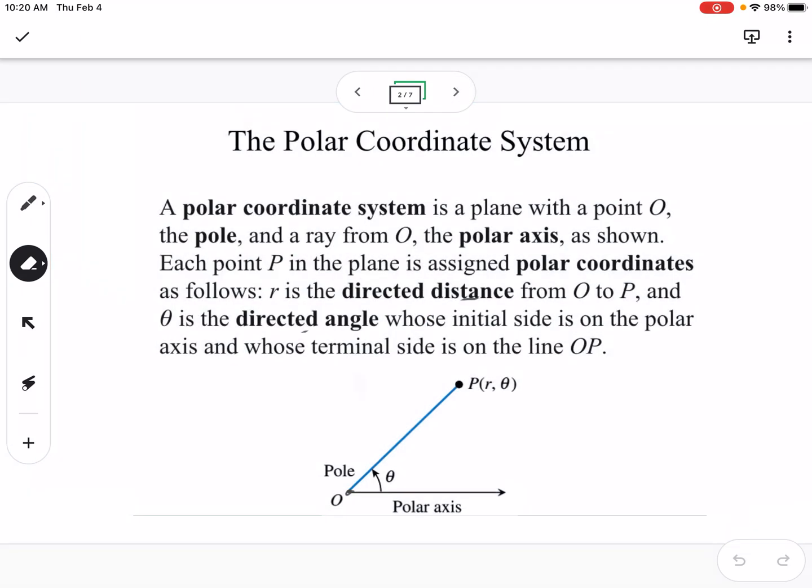So the polar coordinate system is a coordinate system based on a directed distance and a directed angle. So you can see here, points in the polar coordinate system are going to have an R and a theta. So R is going to be the distance from the origin to the point, and so that distance is R, and then we have a directed angle that's going to tell us where that point is located from the origin.